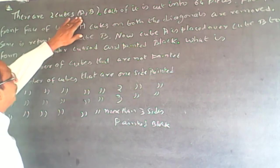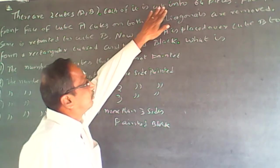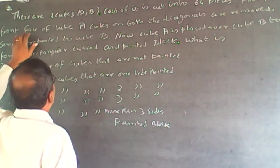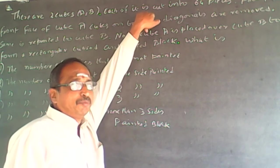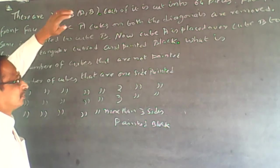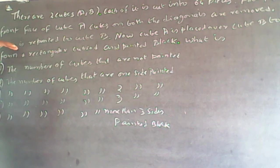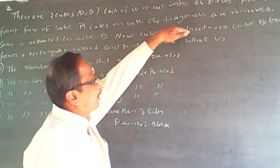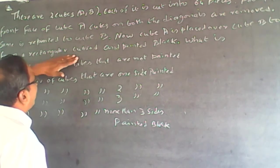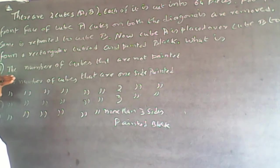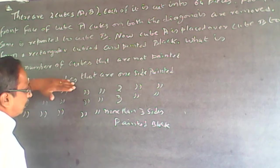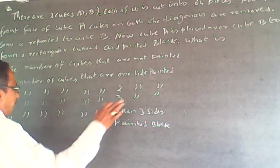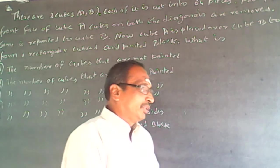The question is: there are two cubes A and B, each currently 4x4x4. From the front face of cube A, tubes and both the diagonals are removed. The same is repeated to cube B. Now cube A is placed over cube B to form a rectangular cuboid and painted black. What is the number of cubes that are not painted, painted one side, two sides, three sides, or more than three sides?